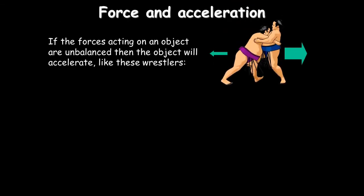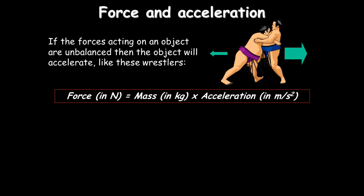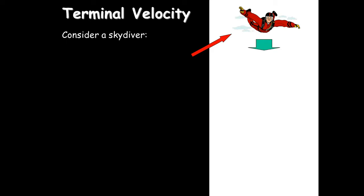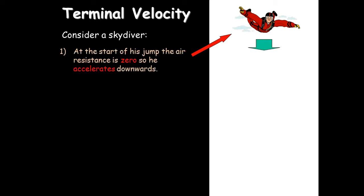There is an equation linking force and acceleration — the bigger the force, the bigger the acceleration. Looking at two sumo wrestlers, the one on the left pushes harder so the other accelerates to the right. To work out acceleration, use the equation — put it in a triangle if you want to rearrange. Force equals mass in kilograms times acceleration: bigger force, bigger mass, bigger acceleration.